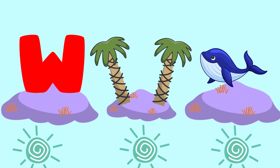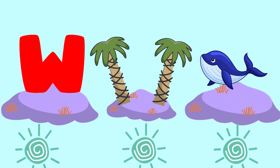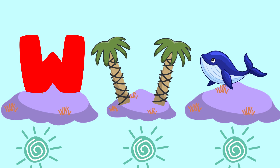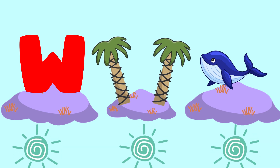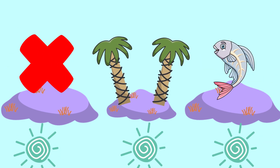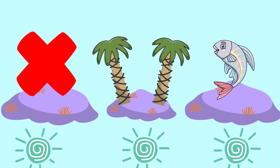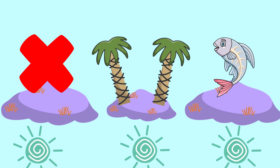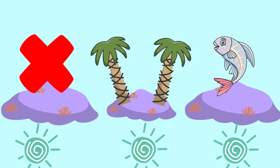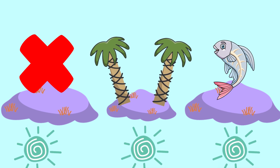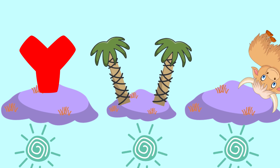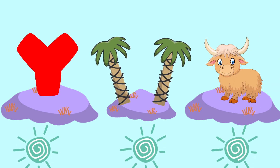V. Verenness. W is for Whale. W. Whale. W. Whale. W. Whale. X is for X-ray fish. X. X-ray fish. X. X-ray fish. X.